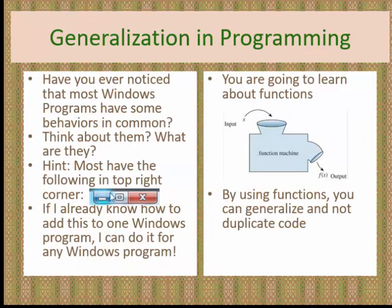Here is an image you've probably seen many times in Windows. Almost all Windows programs have the same common behavior — the close window, minimize, and restore buttons right here in the top right corner. Does the programmer, every time they write a new program that uses a window, have to code this again and again? No — because that code has already been written. In fact, Microsoft wrote it. Every time I create a program that runs in a window, it's automatically included when I add a form to my program. Isn't generalization a great thing?